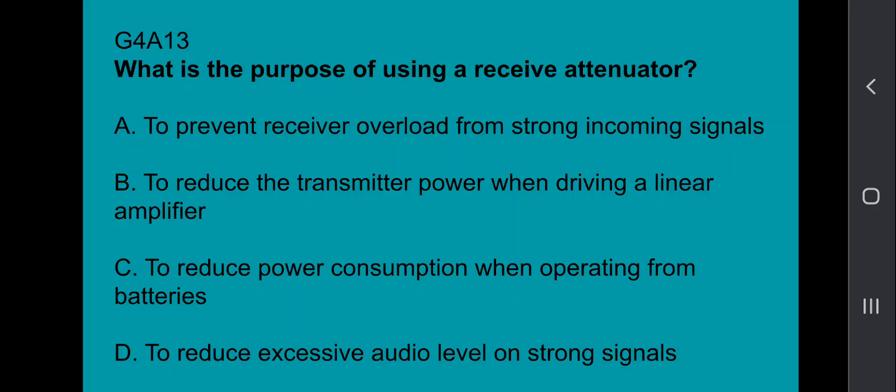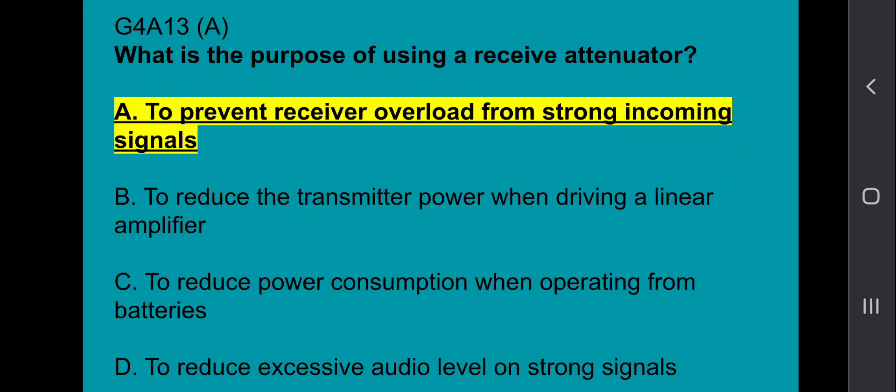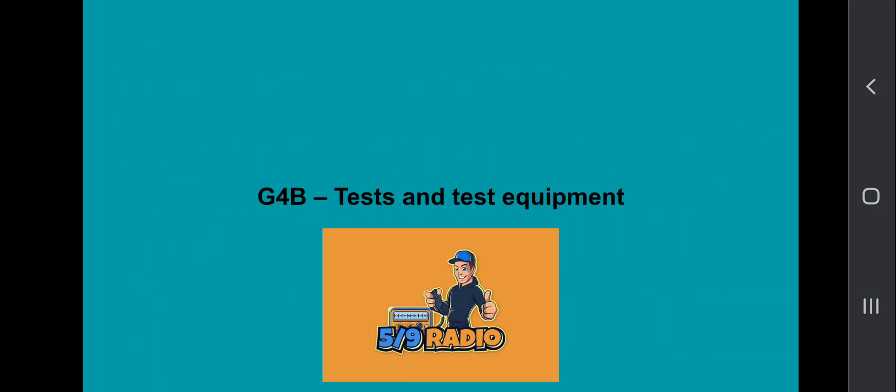G4A13, what is the purpose of using a receive attenuator? To prevent receiver overload from strong incoming signals. G4B covers tests and test equipment.